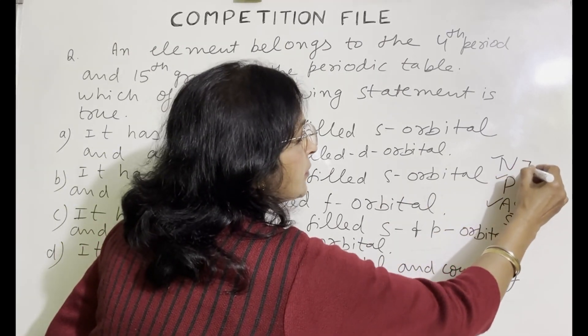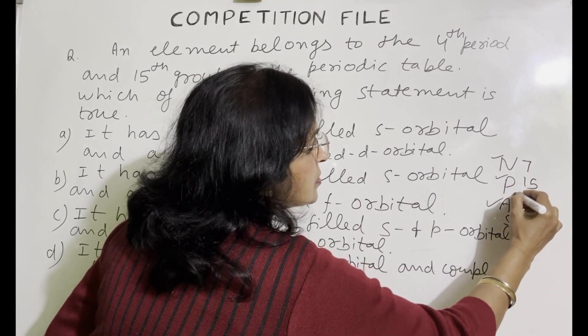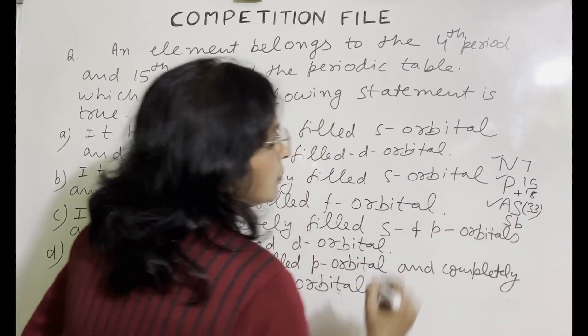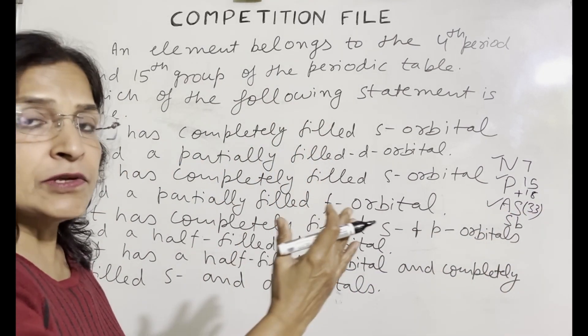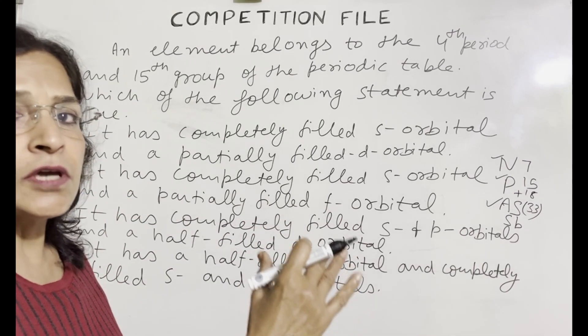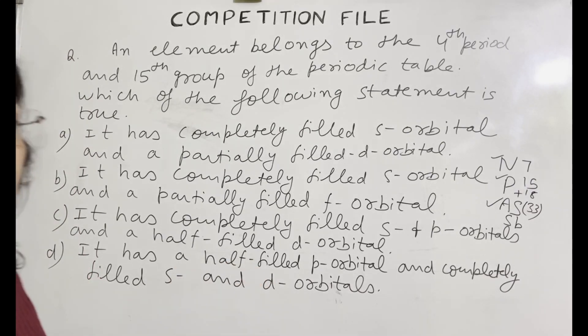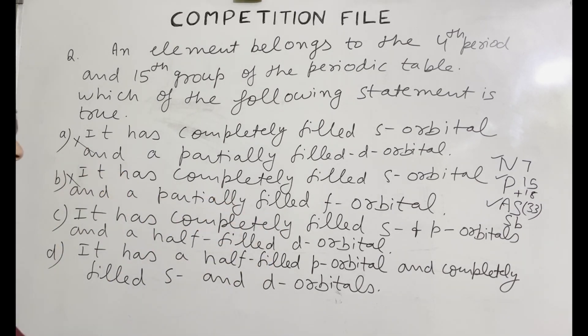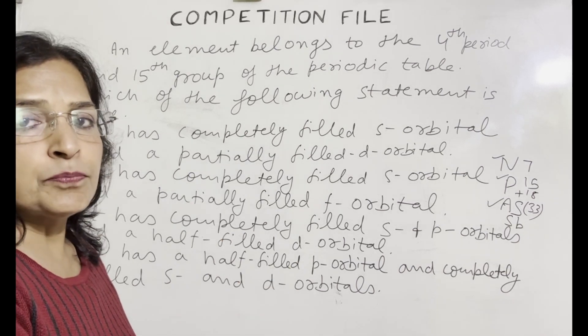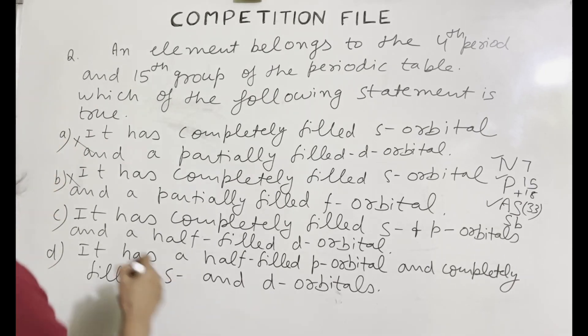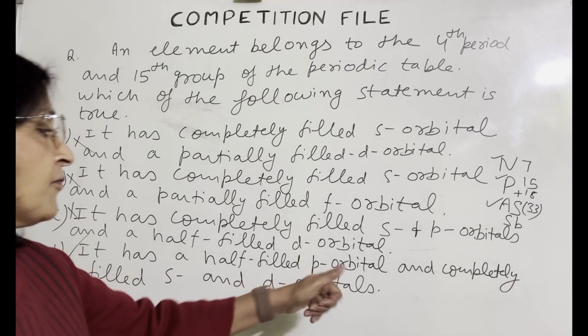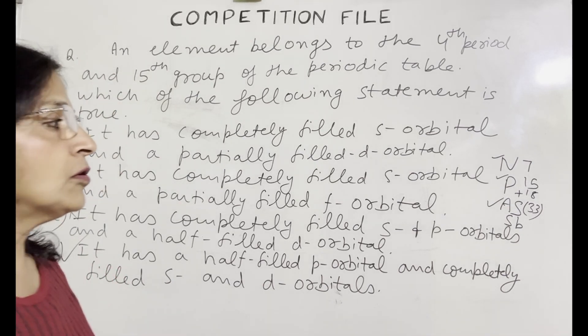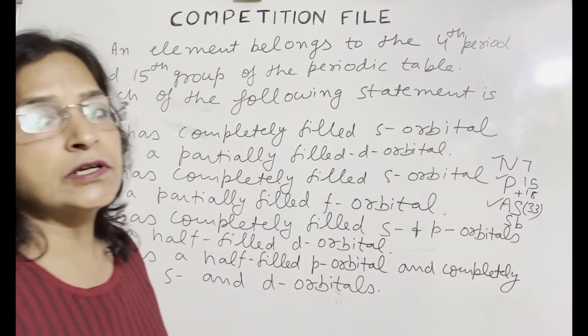Atomic number of nitrogen will be 7. Phosphorus add 8, 15. Add 18, 33. So arsenic's atomic number is 33. This means before it the 3d series, in that the d orbital filling is complete. So d orbitals will not be partially filled. D orbitals will be completely filled. So first choice is wrong. It has completely filled s orbital and a partially filled f orbital. F orbital doesn't arise at all. The answer is d. It has a half filled p orbital and completely filled s and d orbital. So before arsenic the d orbitals filling is complete.